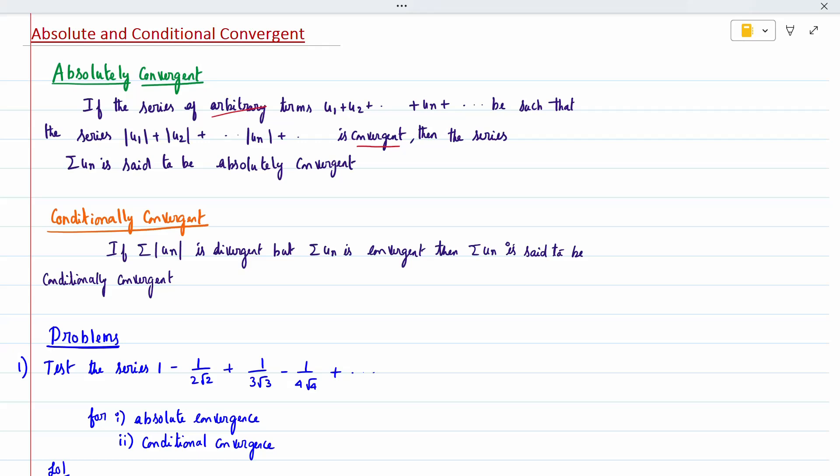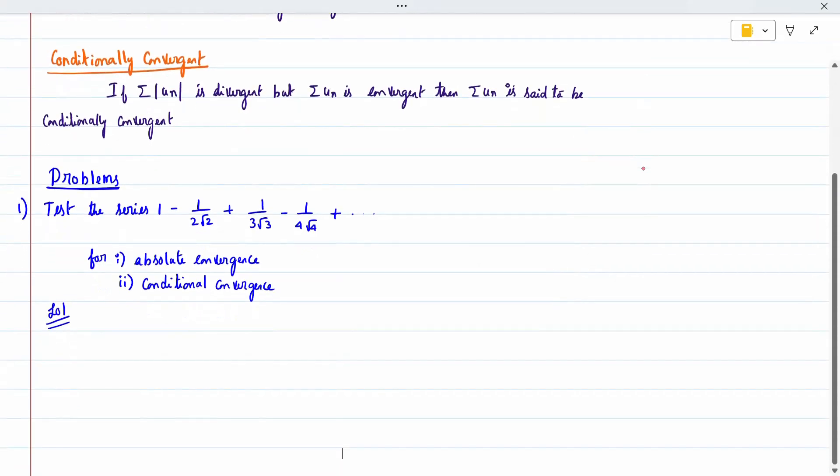The answer can be only two cases: absolutely convergent or conditionally convergent. For example, consider the series 1 - 1/(2√2) + 1/(3√3) - ... The sum of uₙ is 1 - 1/(2√2) + 1/(3√3) - ..., and so on.